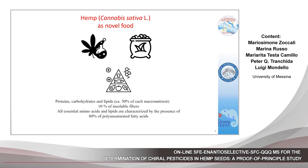Cannabis sativa is an herbaceous plant belonging to the Cannabaceae family. Its cultivation dates back to very ancient times. In particular, the plants were cultivated as a fiber crop for the production of textile, and seeds were considered as a bioproduct intended as animal feed. Recently, several research papers reported the high nutritional value and potential functionality of hemp seeds. This novel food is now considered as a functional food thanks to its composition: an equal amount of protein, carbohydrates, and lipids — about 30% of each macronutrient — and about 10% of insoluble fibers.